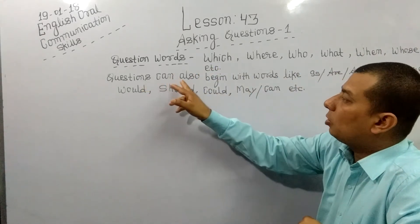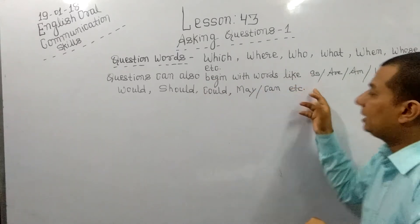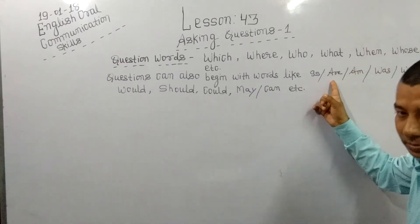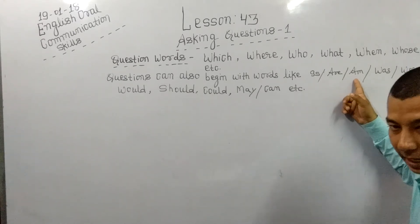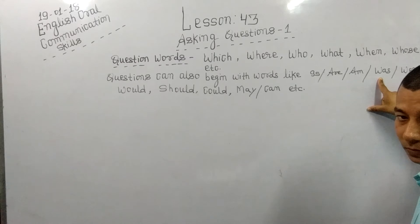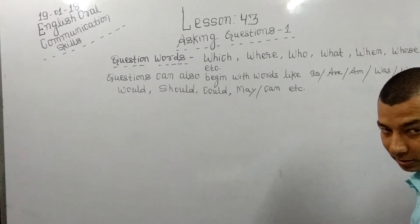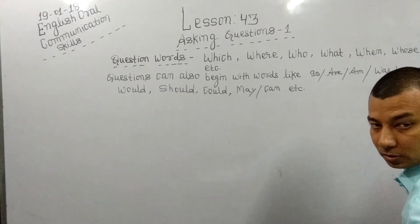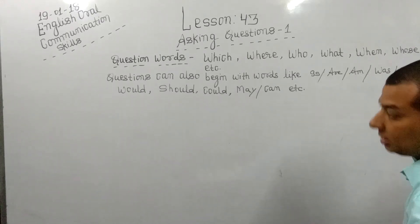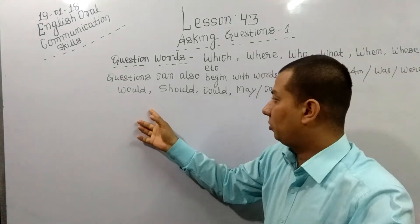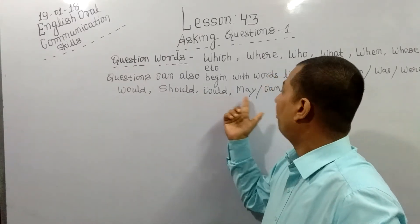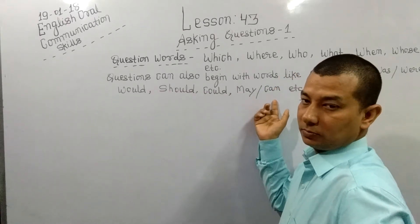Questions can also begin with auxiliary words. Can you form a question with 'Is'? — Is it your pen? With 'Are'? — Are they going to play? With 'Am'? — Am I writing? With 'Was'? — Was he late? With 'Do'? — Do you like it? Do you go there? With 'Does'? — Does he play? With 'Would'? — Would you like to take coffee? With 'Could'? — Could you please come here? With 'May'? — May I go here? With 'Can'? — Can you come?